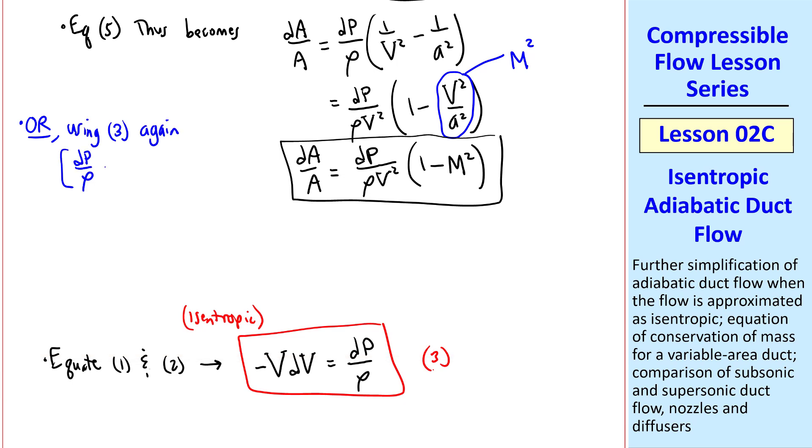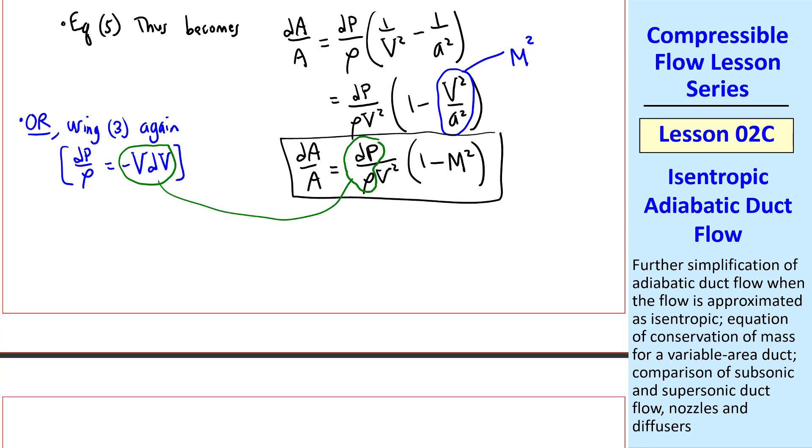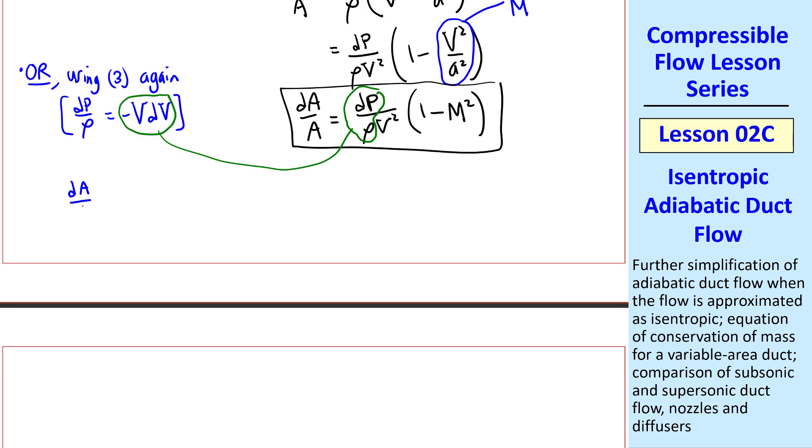Or using equation 3 again, which was dP over rho equal negative V dV, we plug this in place of dP over rho and get dA over A equal negative dV over V times 1 minus Mach number squared. But we'll just rearrange this into a more convenient form, namely dV over V equal 1 over M squared minus 1 times dA over A. This will be a very useful equation. I'll call it equation 6.